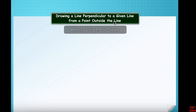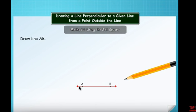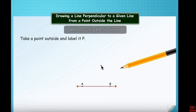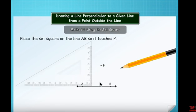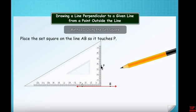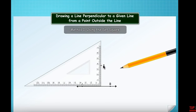Method one: using the set square. Take a scale and draw a line AB. Now take any point outside the line and name that point P. To draw a perpendicular, take a set square, place it exactly on the line, and slide the set square to point P. Draw a straight line — that is the perpendicular line from point P to line AB.